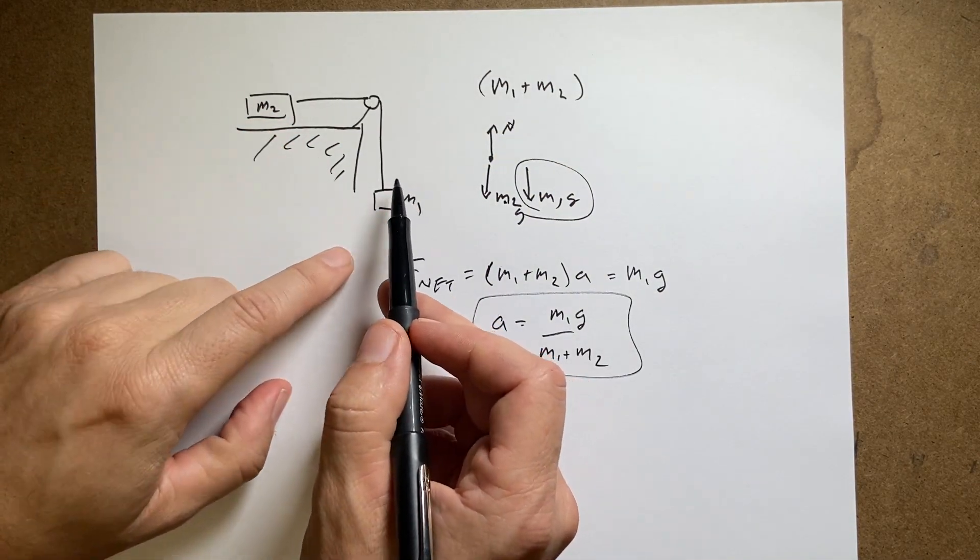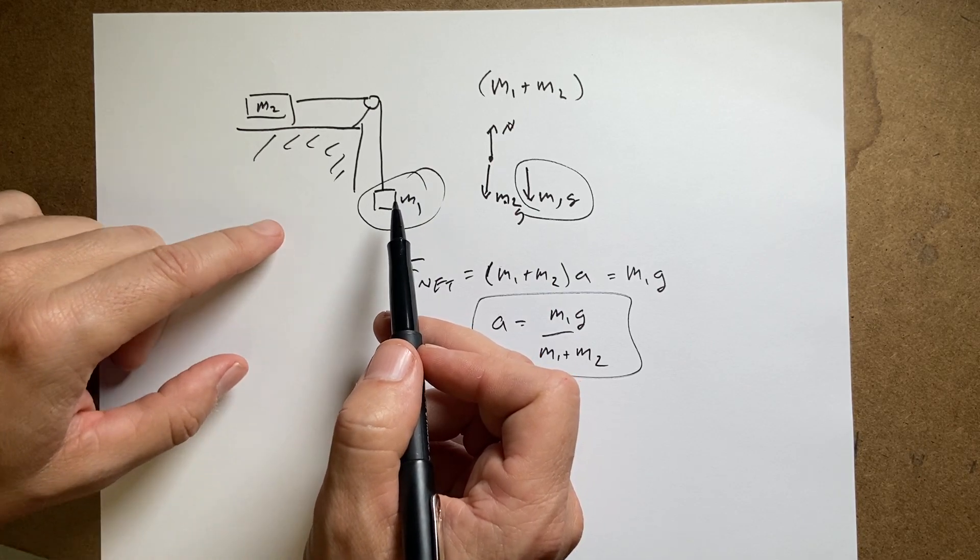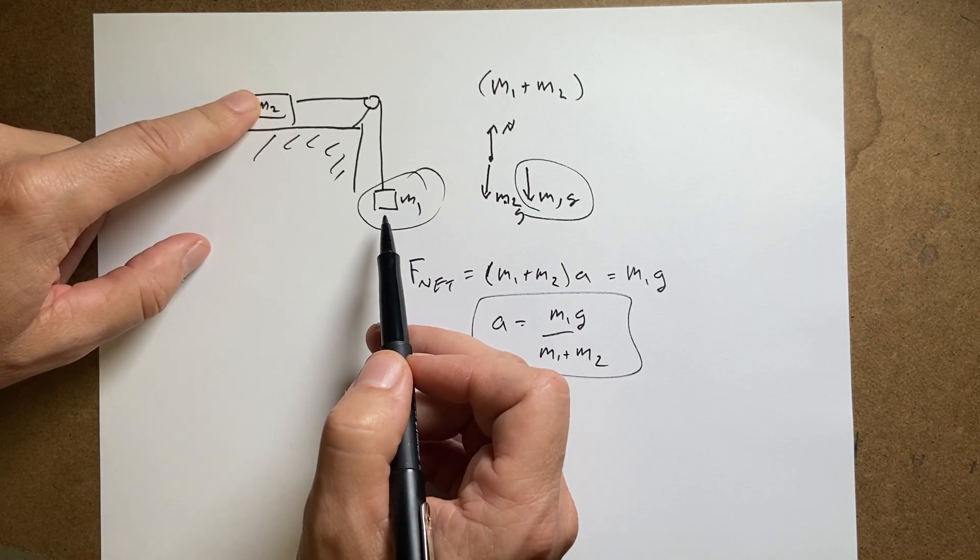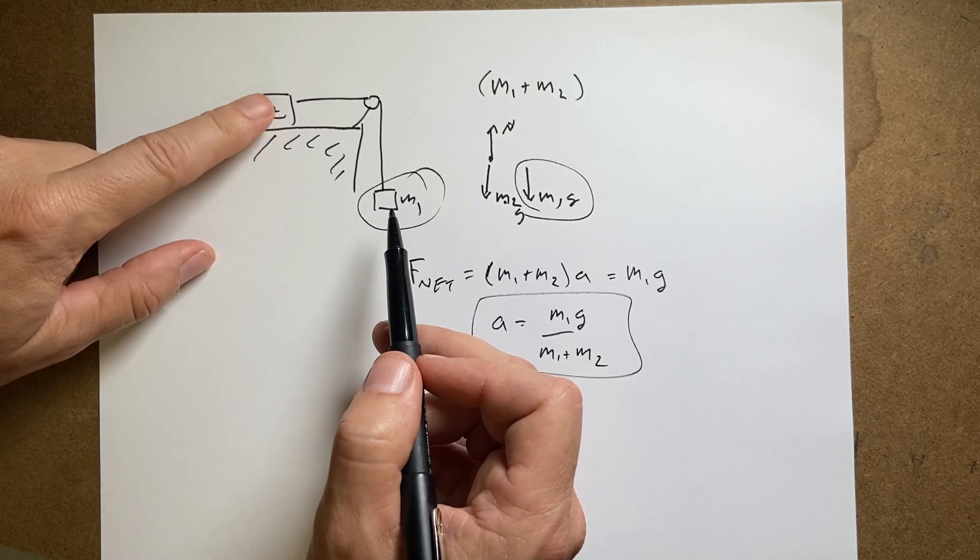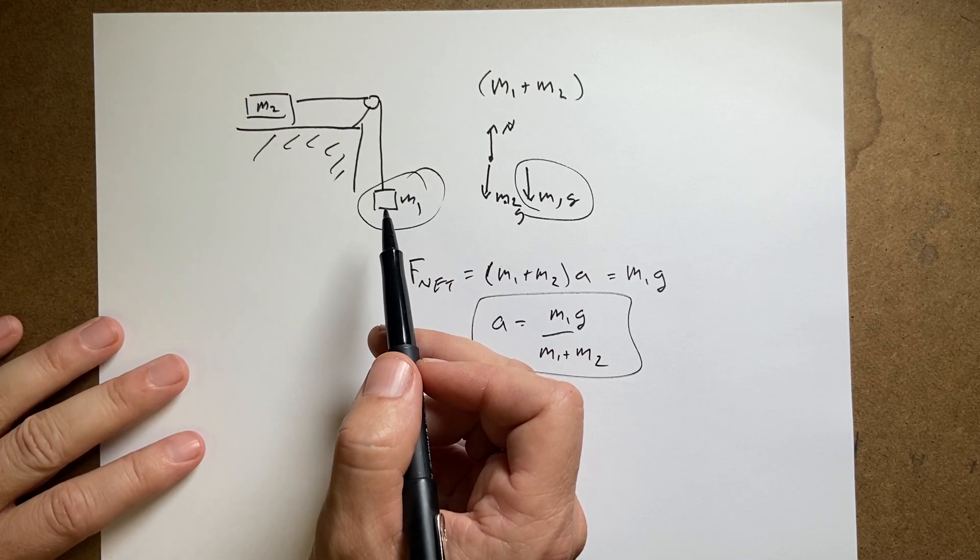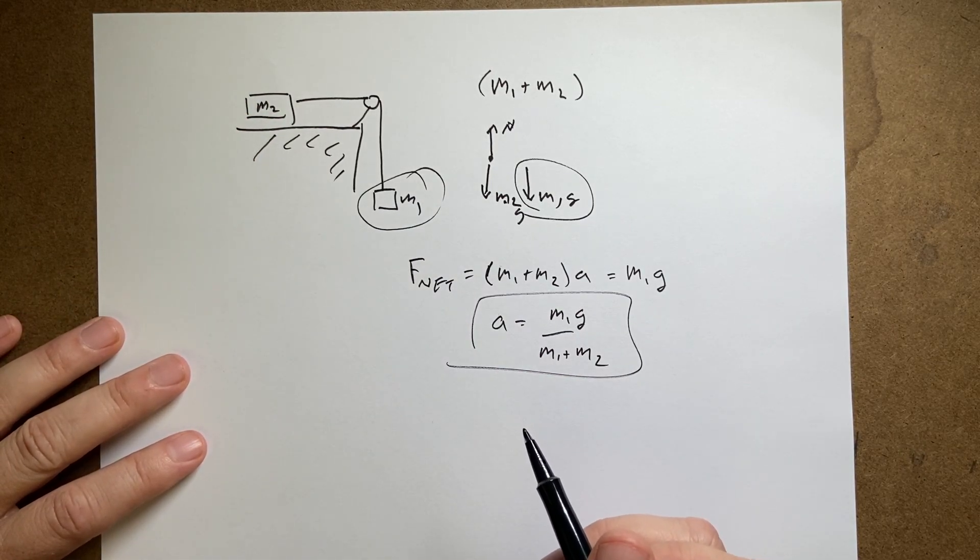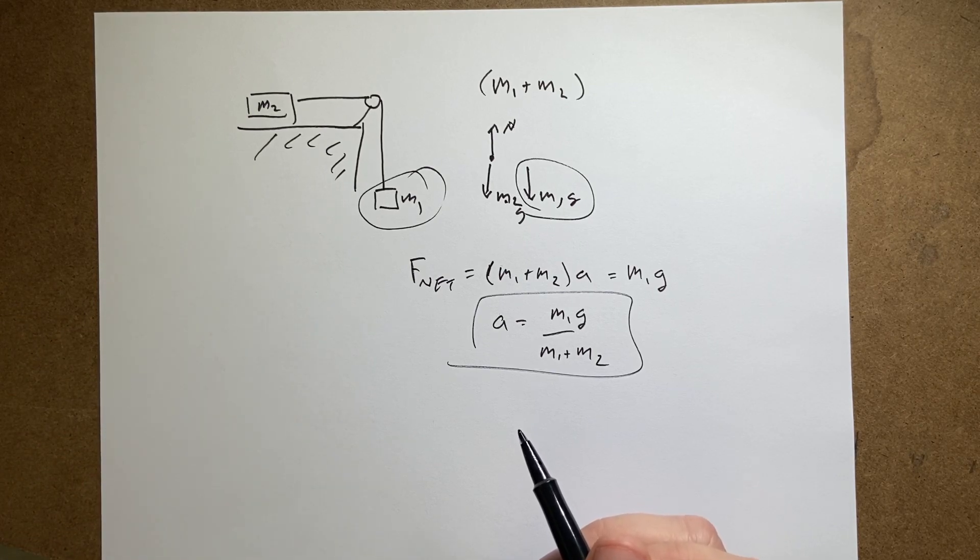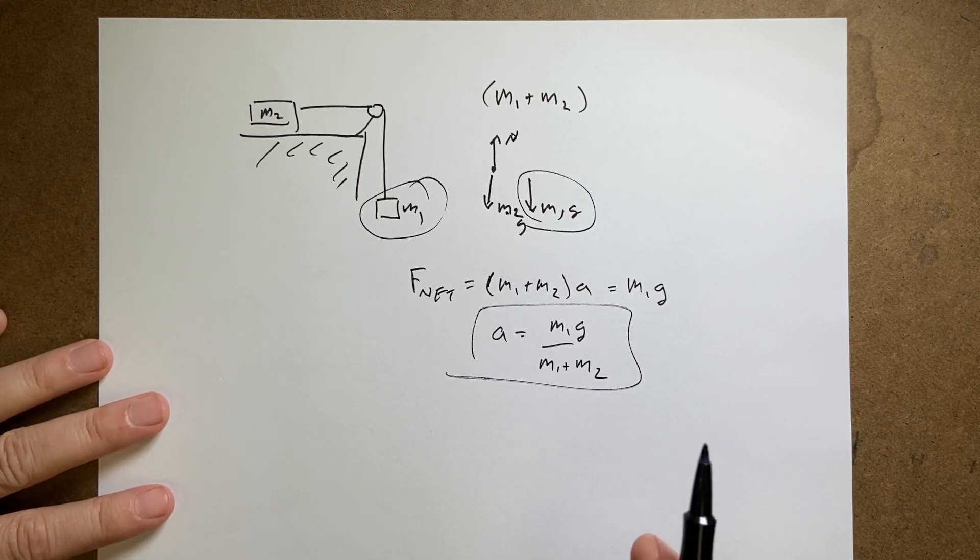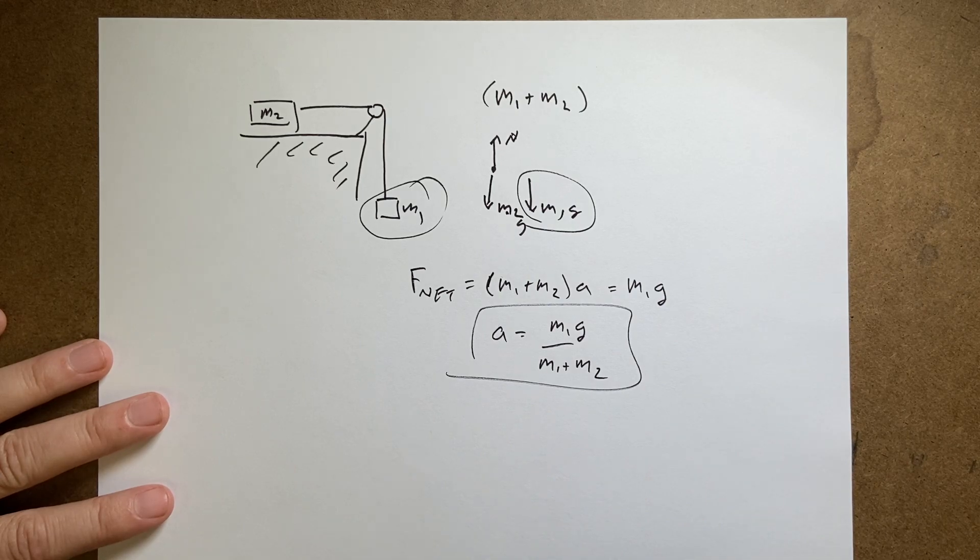If you think about this as just, the gravitational force on this is what acts on the system. But both masses have to accelerate. But the gravitational force essentially doesn't act on this one because the normal force cancels that one. And that's just another way to think about it. Okay. We'll do another Atwood machine problem very soon. Thank you.